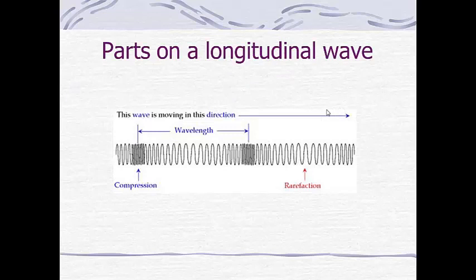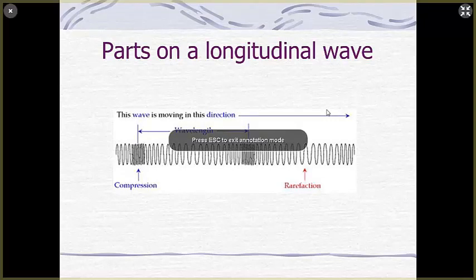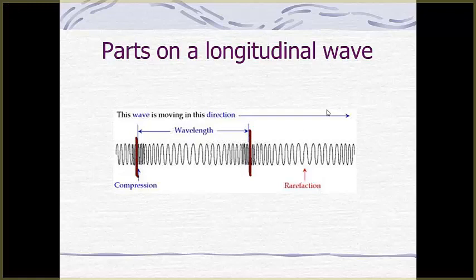On a longitudinal wave, we can still talk about the wavelength as well. Notice how the wavelength on a longitudinal wave is measured from compression to compression. So that's the easiest way to measure the wavelength on a longitudinal wave. The amplitude on a longitudinal wave is actually represented by that compression, so how dense that part of the wave is. This would be the amplitude on a longitudinal wave. And the wavelength, again, would measure from compression to the next compression.